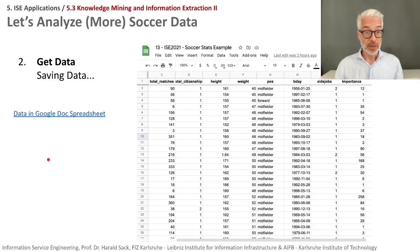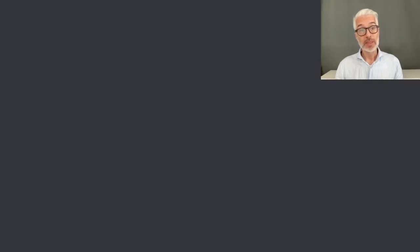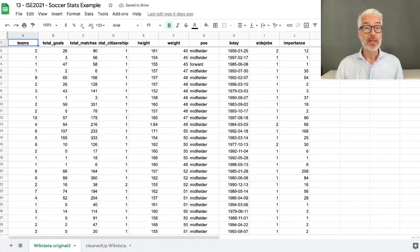We have prepared the spreadsheet already for you and put the data in there and we can have a quick look. So you have here columns with a number of teams the player has played with the number of total goals so they are summed up as well as the number of matches played then we have the total number of citizenships the height the weight the position played the birth date the number of jobs besides being a soccer player and of course the importance as number of Wikipedia pages referring exactly to that player to get a notion of the importance.